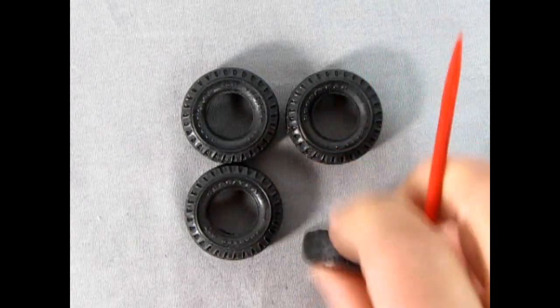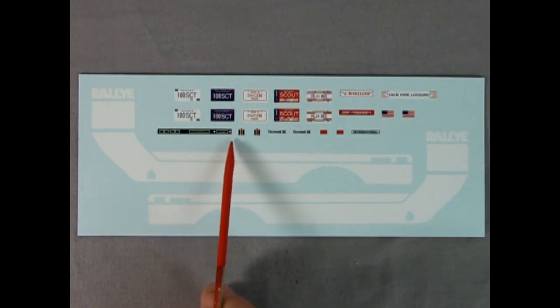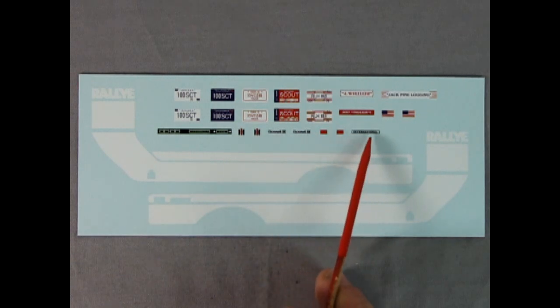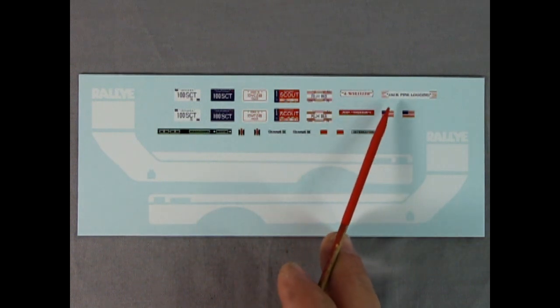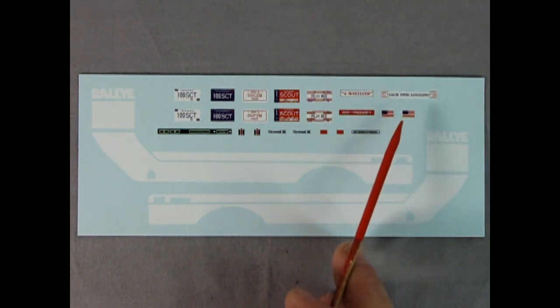Here's the decal sheet for our International Scout and we have a good collection of license plates here. We have Indiana for 1976, California, Iowa, Michigan and Illinois. These are all 1976 plates. There we have our instrument panel in one long strip. The International Harvester logo as well as the Scout 2 logo and International here. And then some bumper stickers like four wheels and just trucking or maybe four wheelers as well as Jack Pine logging and some American flags.